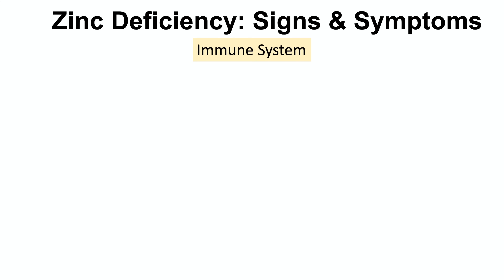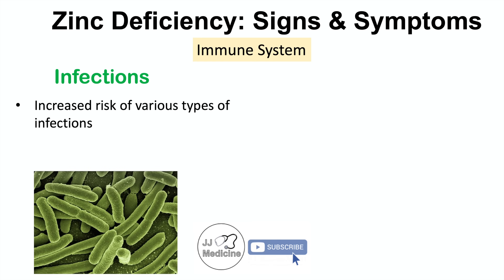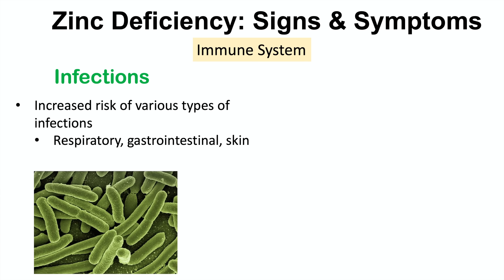Zinc is important in immune system functioning, so zinc deficiency can cause problems with the immune system and an increased risk of various infections. The types of infections include respiratory infections, gastrointestinal infections, and skin infections. Respiratory infections in particular are more problematic for patients with zinc deficiency, and gastrointestinal infections can contribute to the diarrhea also associated with zinc deficiency.